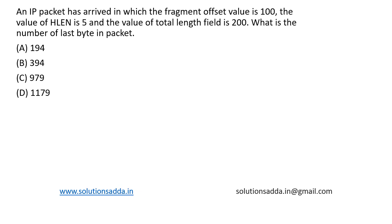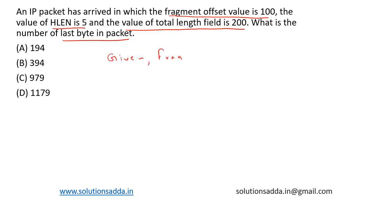This is a question from computer networks. An IP packet has arrived in which the fragmentation offset value is 100, the value of header length is 5, and the value of total length field is 200. What is the number of the last byte in the packet?